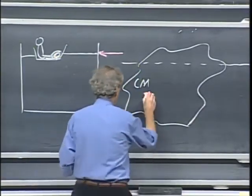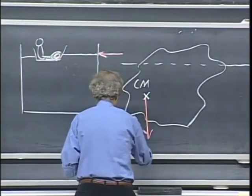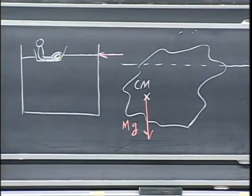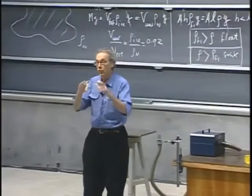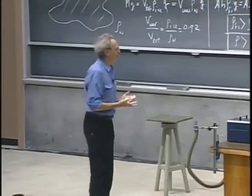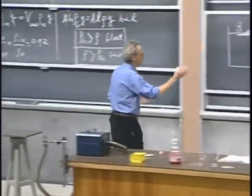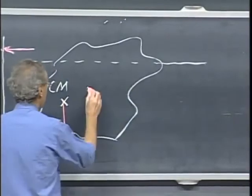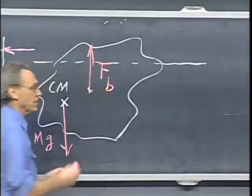So if this object has a certain mass, then this is the gravitational force. But now look at the center of mass of the fluid that is displaced. That's clearly more here, somewhere here, the displaced fluid. That is where the buoyant force acts.